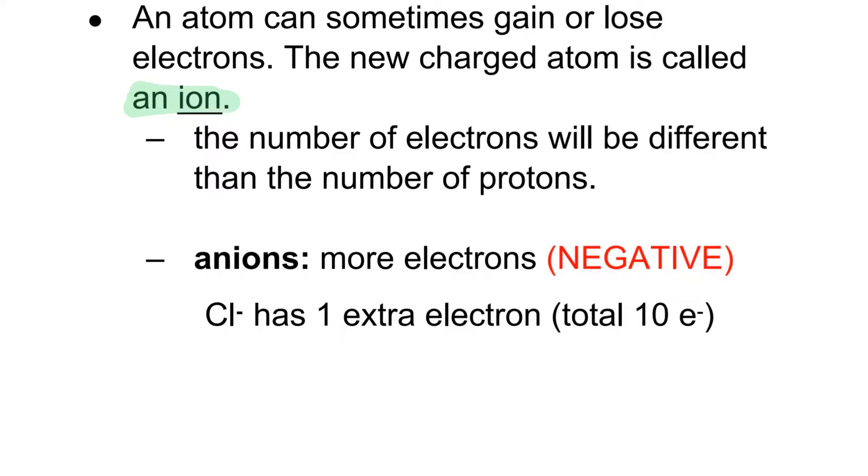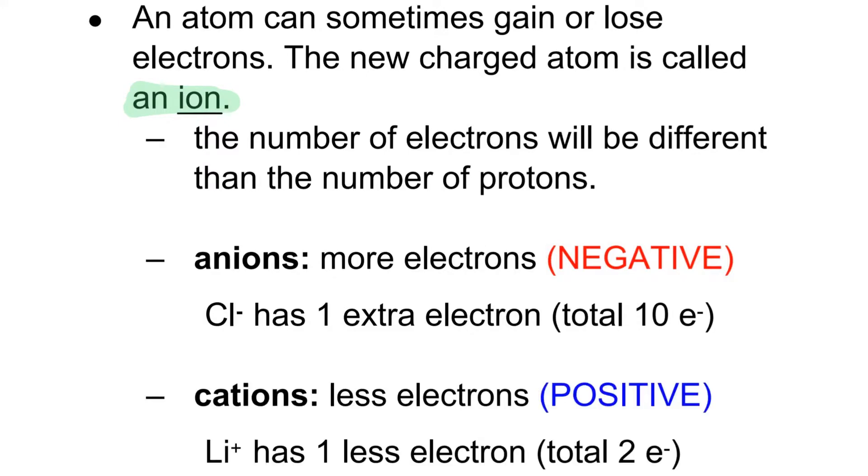First is anions where there are more electrons than protons and there's an overall negative charge. So Cl- has one extra electron for a total of 10 electrons compared to the 9 protons. Cations have less electrons—they lose electrons and have an overall positive charge. Li+ has one less electron for a total of two electrons.